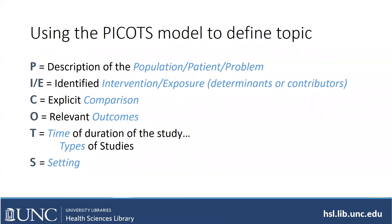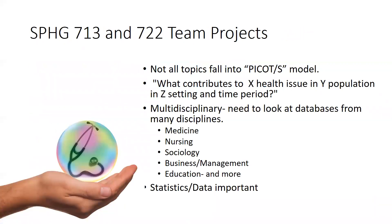Outcomes might be smoking cessation, diet, or rate of diabetes. There's usually an outcome you want to have. T could be the time or duration of the study — over a two-year period, over 20 years — or you might focus on a specific type of study like randomized controlled trials or qualitative. And S would be your setting: in a nursing home, in schools. You're not going to have all of these for every question, but it's good to go down the list and see if you can identify those aspects of your topic. Not all team projects will fall into the PCOTS model, but it can help define parts of it.